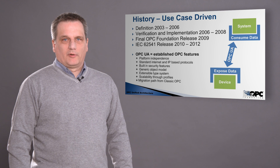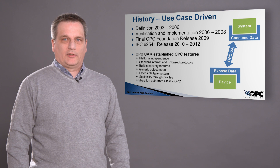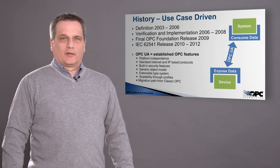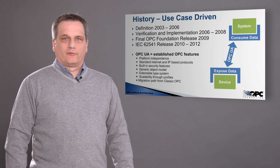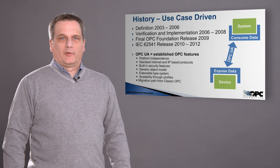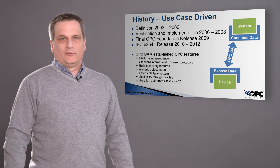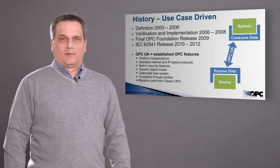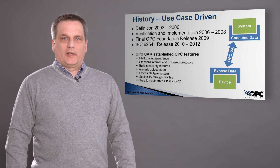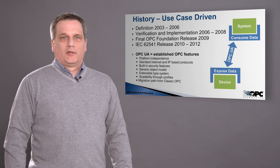OPC UA was created from 2003 to 2006, and the specification was written in that time. After the specification writing there was a phase of implementing OPC UA to verify that the specification could be implemented in software. OPC UA is a communication platform to expose and consume information. There was a standard before called classic OPC, and we have taken over the good things from classic OPC and extended it.